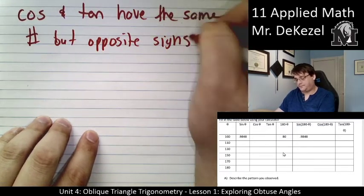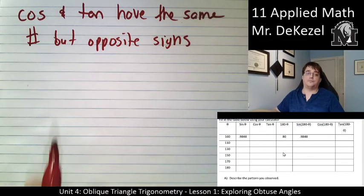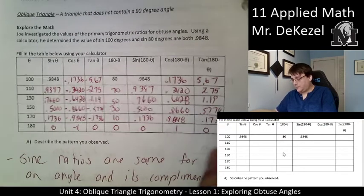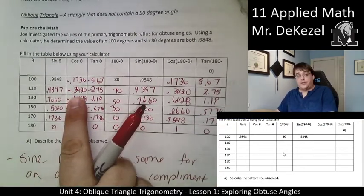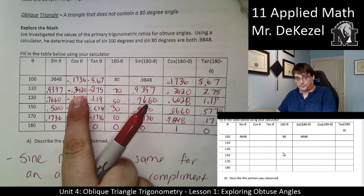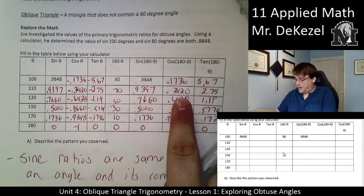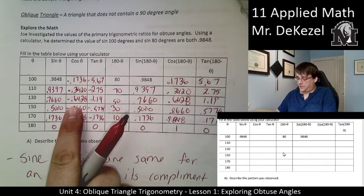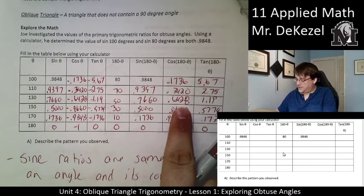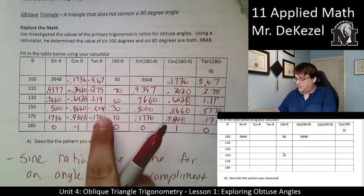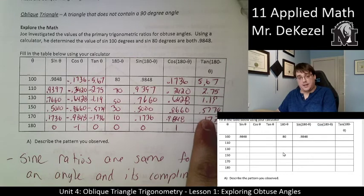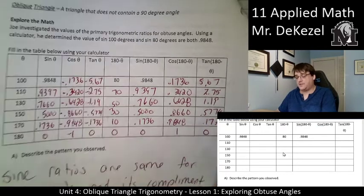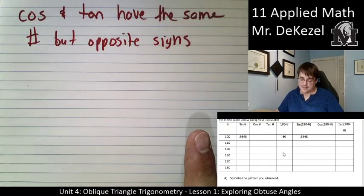These are some of the patterns that we've observed here. So cos and tan have the same number but opposite signs. Negative 0.342 and its complement was positive. Negative 0.6428 and its complement was positive. And it is the same for both cos and tan. They were the same number but they were opposite signs.